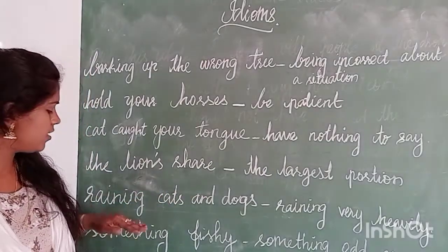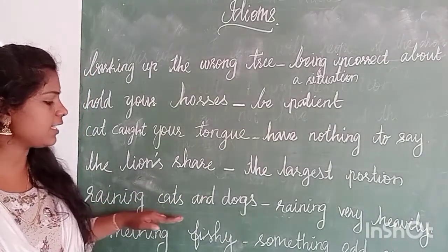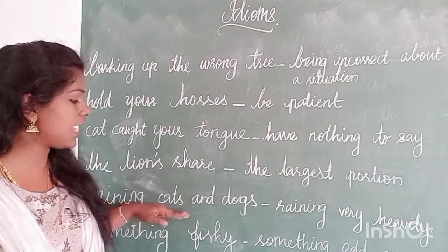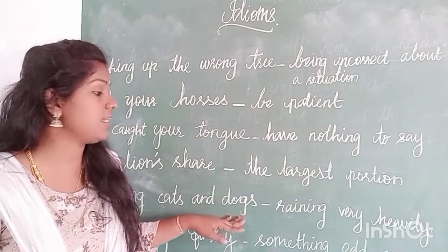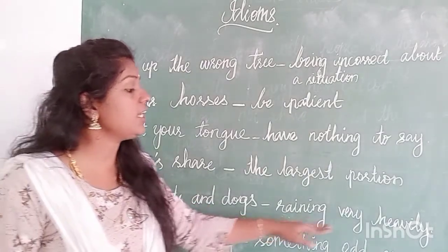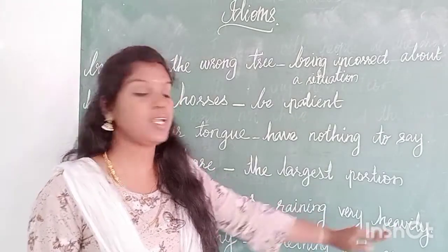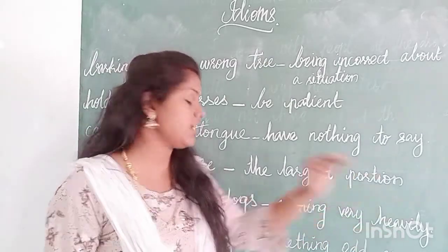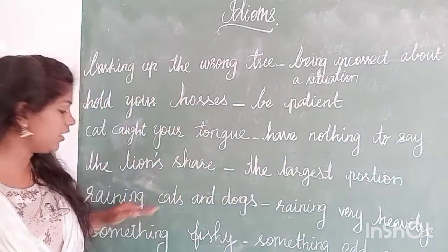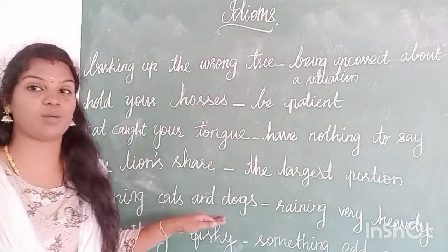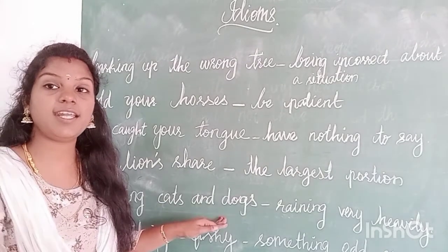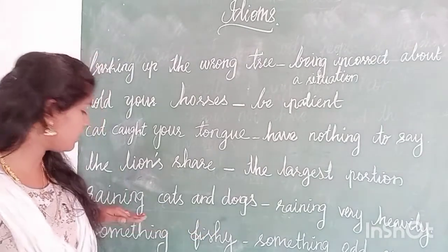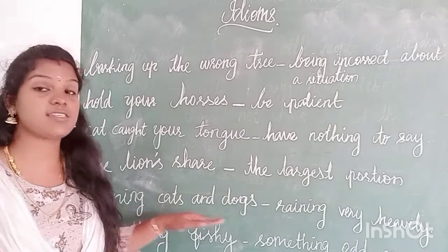Then, 'raining cats and dogs,' which means raining very heavily. We can say, 'It's raining cats and dogs,' which means it's raining very heavily. Raining cats and dogs — got it?